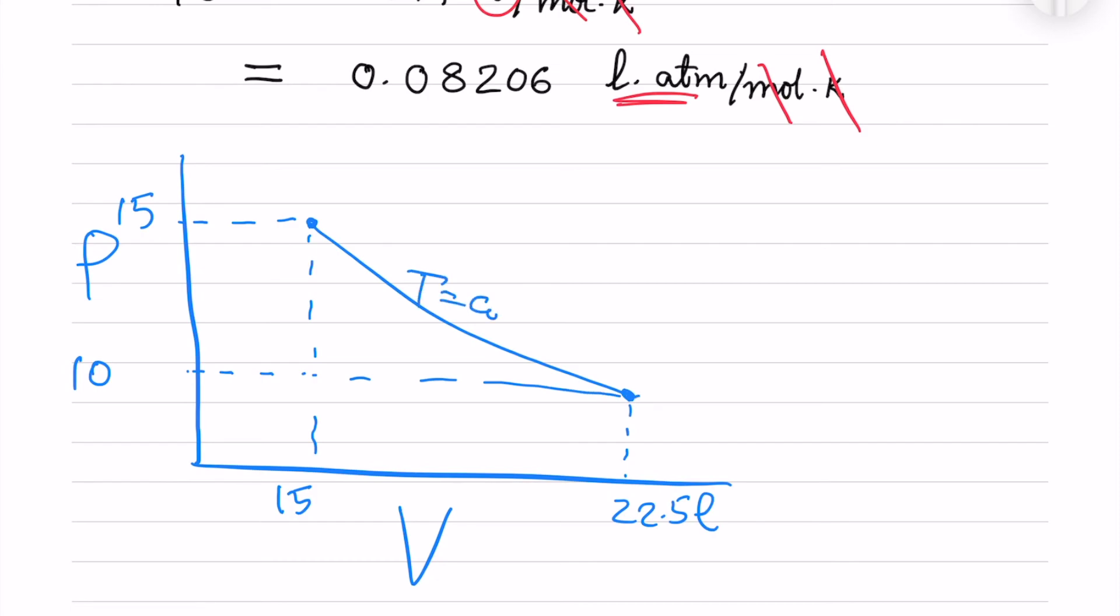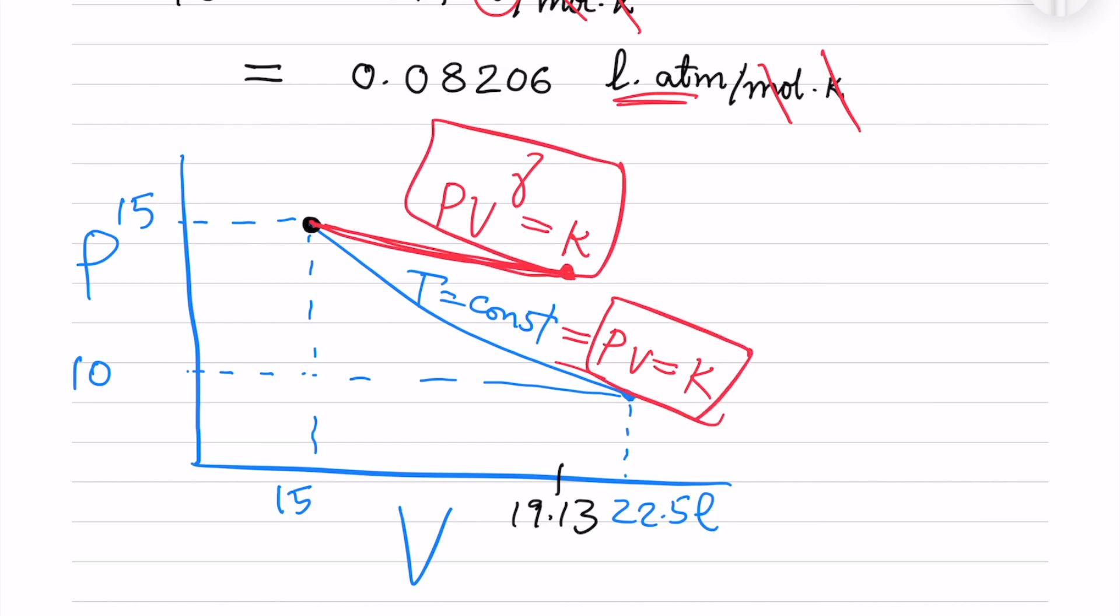The isothermal process has constant temperature. For the adiabatic process, we begin with the same initial state but go to 19.13 liters. The slope of the adiabatic process is steeper than the isothermal process. PV is constant for isothermal, while PV^gamma is constant for adiabatic. This is why we see a difference between both processes on the diagram.